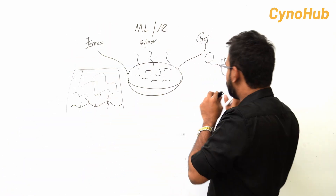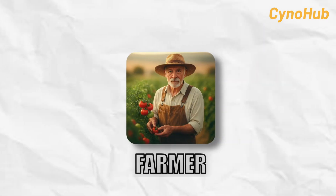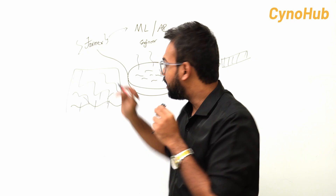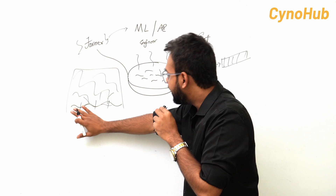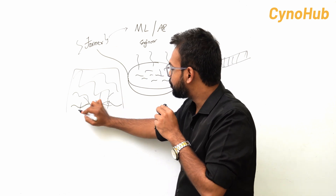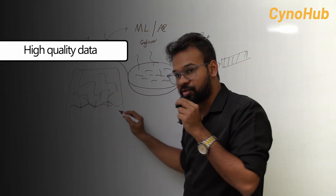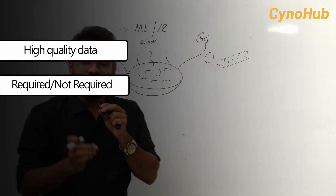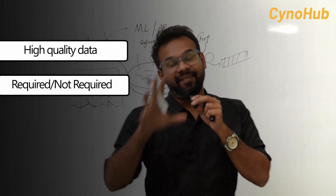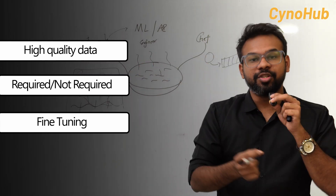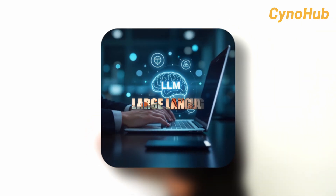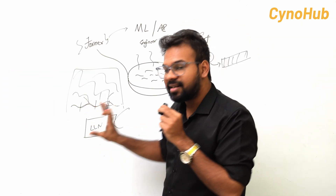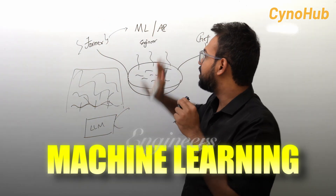So let's look at this example in terms of AI and ML. A farmer is like an ML engineer. The soil is essentially the data. On top of this data, the ML engineer prepares high-quality data and trains models with various parameters — and then builds a large language model like ChatGPT.